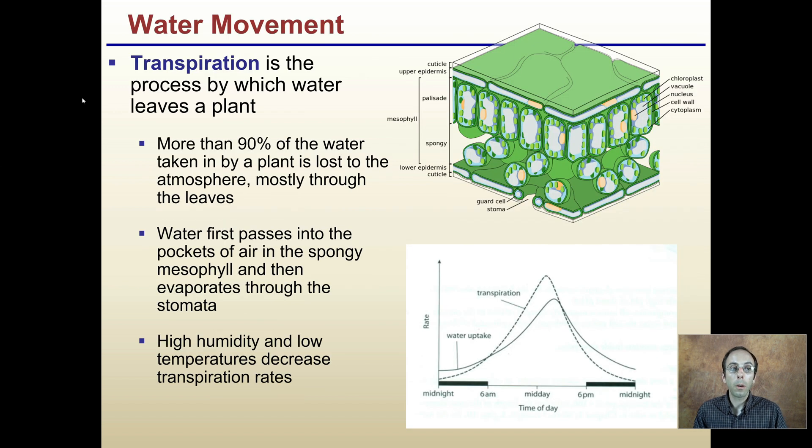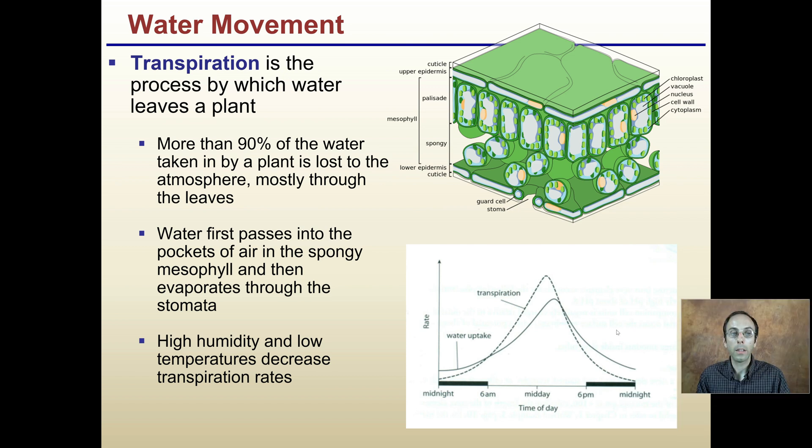Transpiration is the process by which water leaves a plant leaf. More than 90% of the water taken in by the plant is lost to the atmosphere, mostly through the leaves and specifically through the stomata of the leaves, the pores. Water first passes into the pockets of air in the spongy mesophyll and then evaporates out the stomata. High humidity and low temperatures decrease the rates of transpiration.